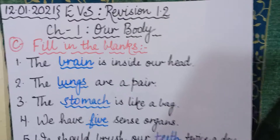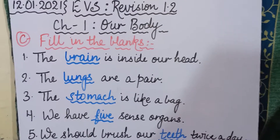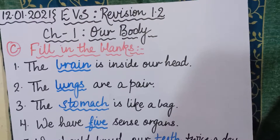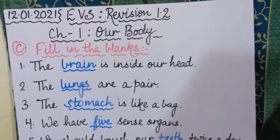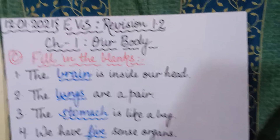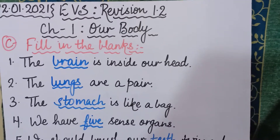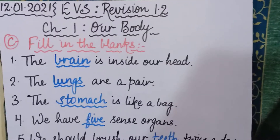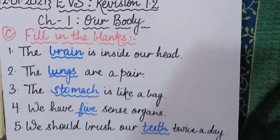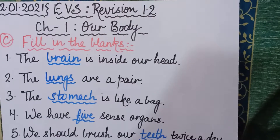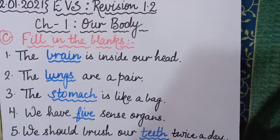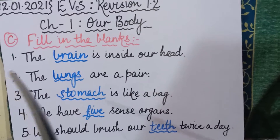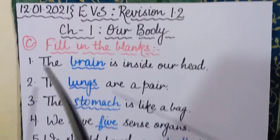Today this is our online EVS class. We did revision number one — revision part 1.1 yesterday — because we have done this chapter in two parts. The first part was 1.1 and today's second part is 1.2. So revision 1.2 is going to be of chapter number 1: Our Body. The first exercise is C part — fill in the blanks — where there are five fill in the blanks. Parts A and B we have done yesterday.